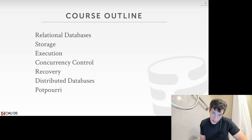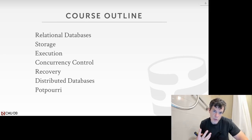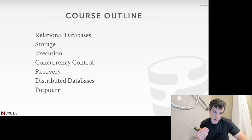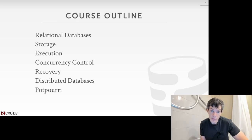The course outline goes through how to build a disk-oriented database system — meaning we assume the database is stored on disk. The topics are broken up into layers of the system: we'll talk about what relational databases are, how to store them, how to execute queries, how to run transactions, and how to recover them if there's a crash. Up to that point, that's the core knowledge you need to understand how a database management system works.